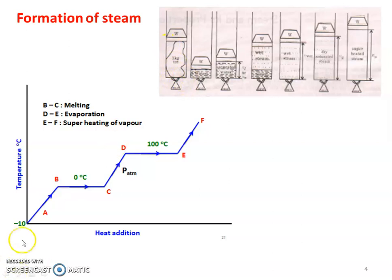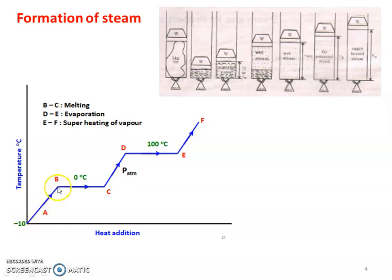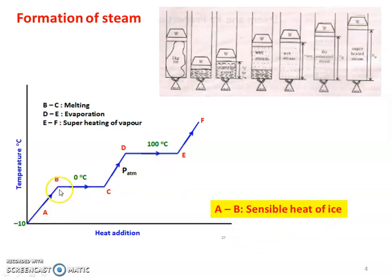Initially, we take ice at minus 10 degrees Celsius. Looking at the diagram, from A to B, the temperature constantly increases from minus 10 degrees Celsius and reaches 0 degrees Celsius. From A to B, the ice is in solid form and the temperature is increasing. This is called the sensible heat of ice.